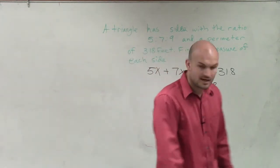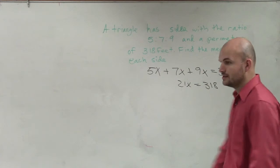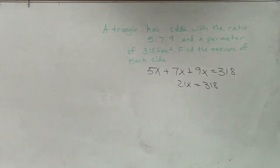So therefore, I have 5x plus 7x plus 9x is going to be 21x equals 318. Alright? So then you take your calculator, which I don't have. Where did my phone go?